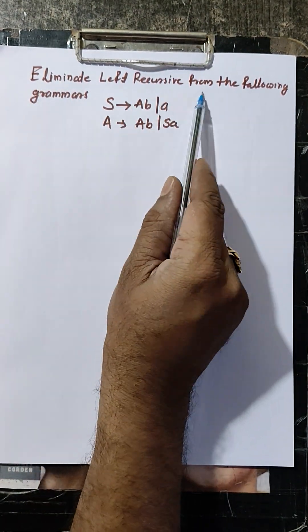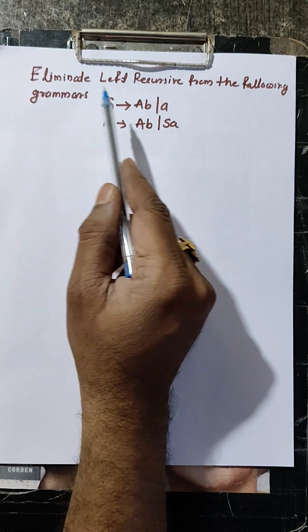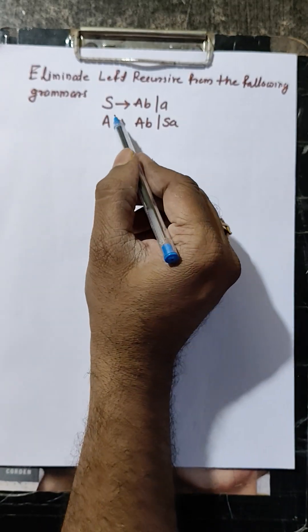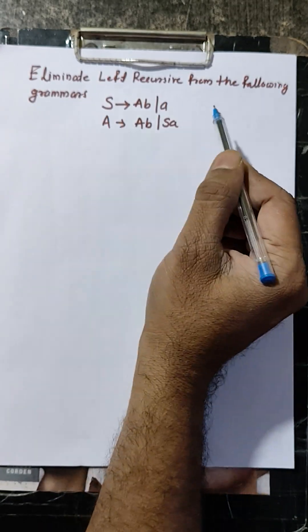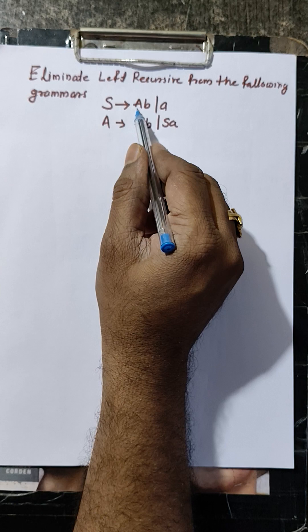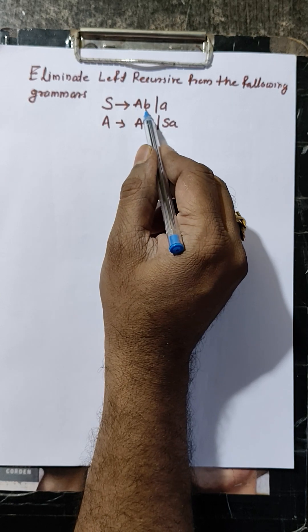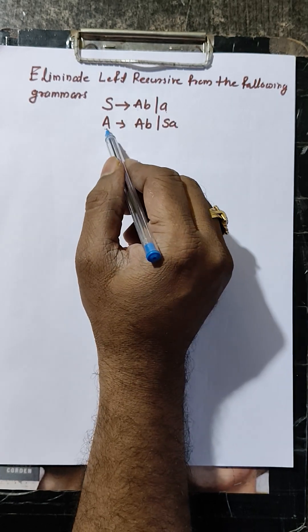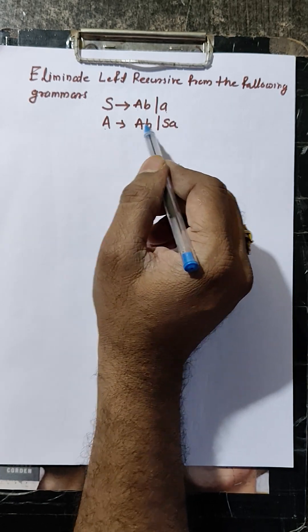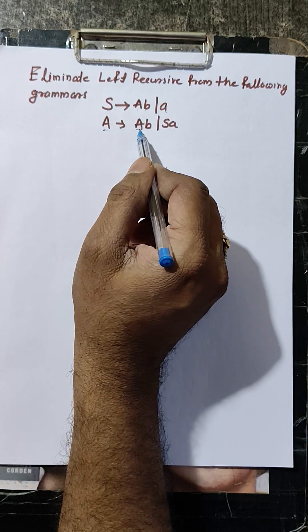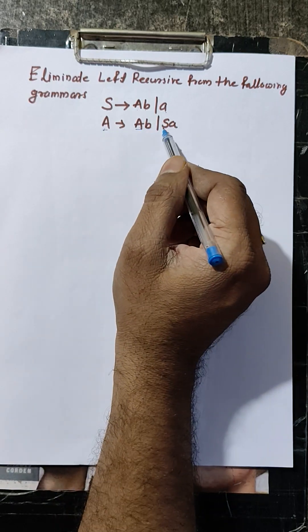Eliminate left recursion from the following grammar. S produces a, b or a. A produces a, b — this is left recursive.